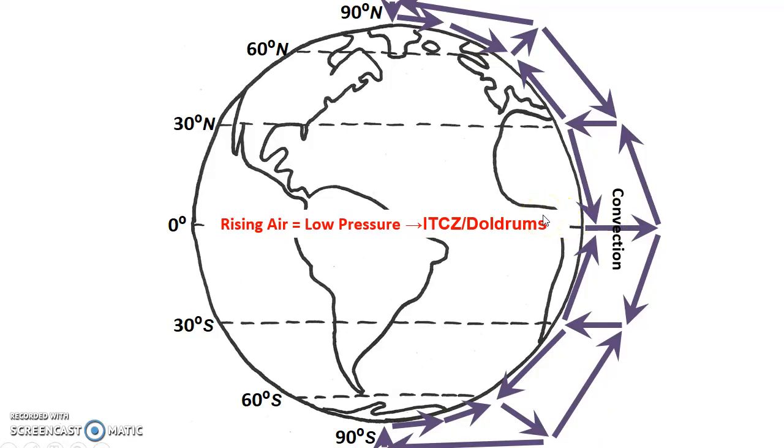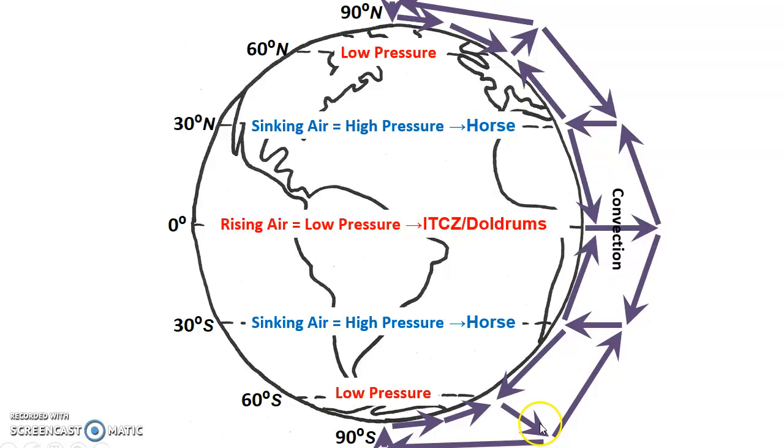At 30 degrees north and south latitude, we have sinking air. You can see, again, those purple arrows. So that gives us high pressure. We call these the horse latitudes. High pressure gives us very dry air. The air is very stable, and this is the location of most of the world's deserts. And then again, at 60 degrees north and south, the air is rising. So low pressure, lots of storms.